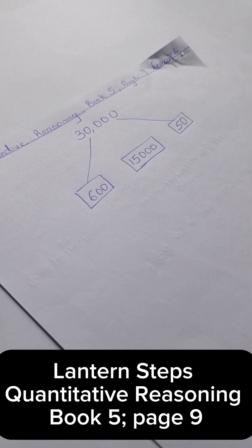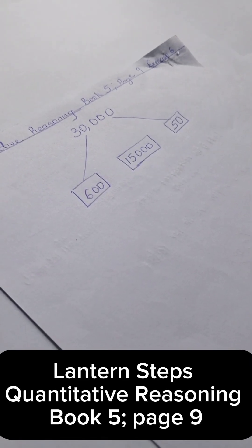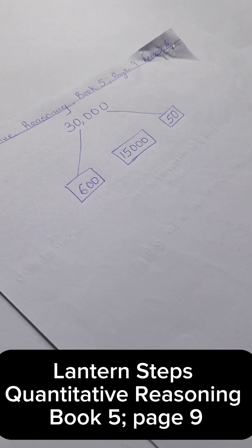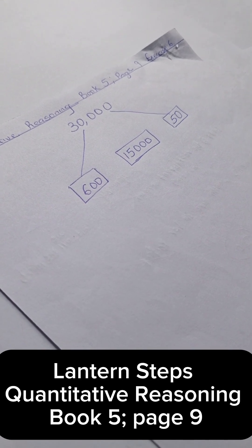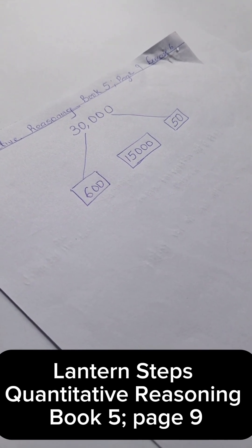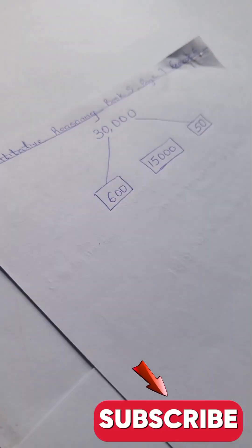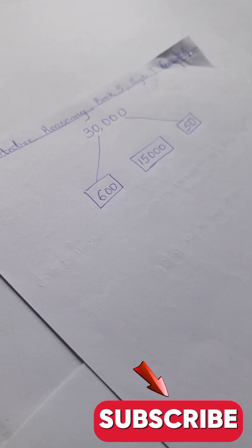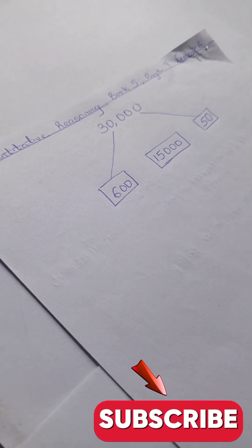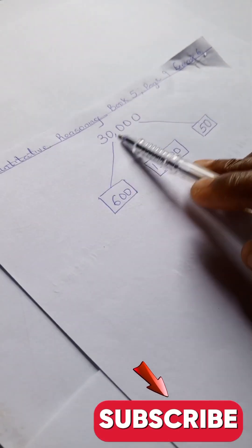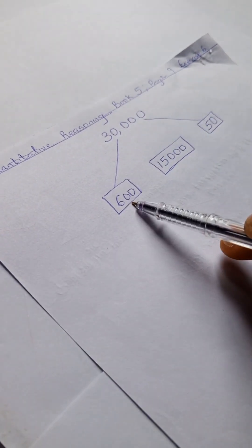Welcome to quantitative reasoning solutions section. We have quantitative reasoning from Lantern Steps Book 5, page 9, exercise 6. Thank you for joining in today and to our new viewers, please do well to like and subscribe to this channel for more quantitative reasoning solutions and problems.